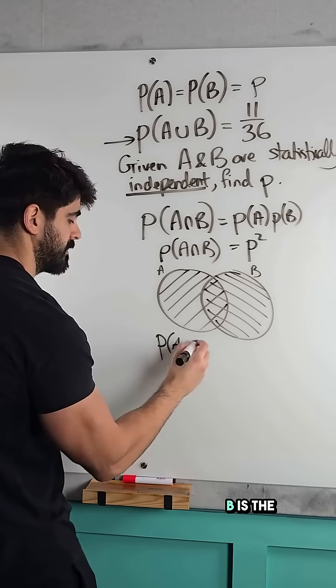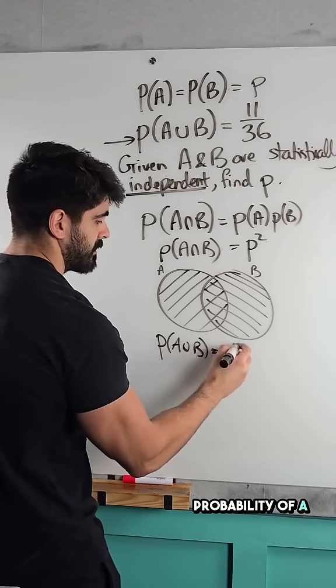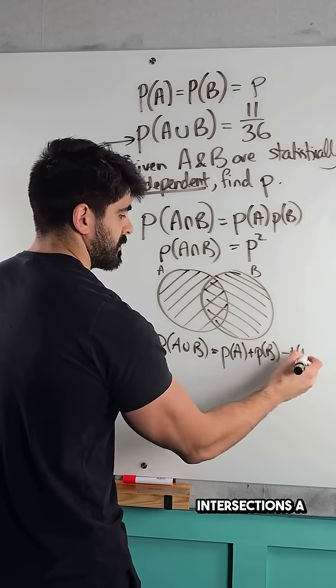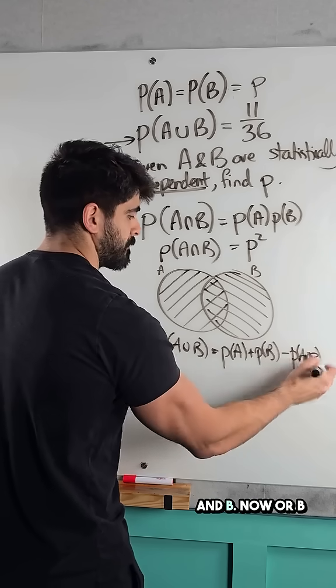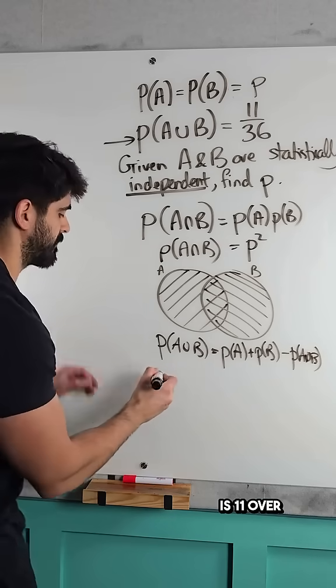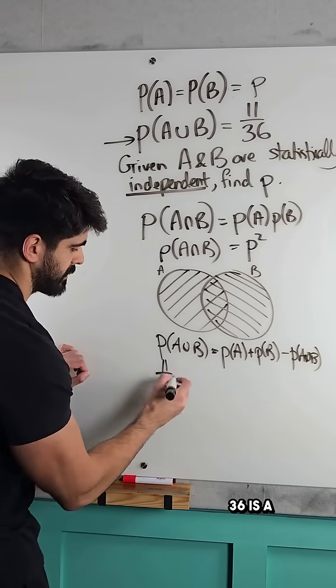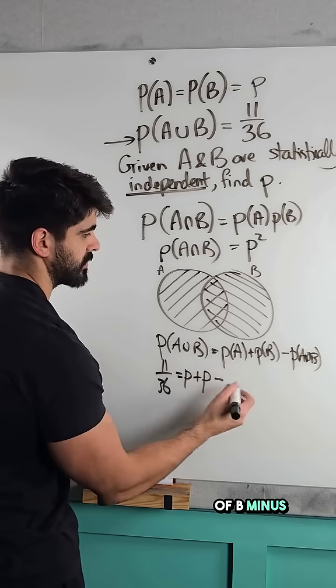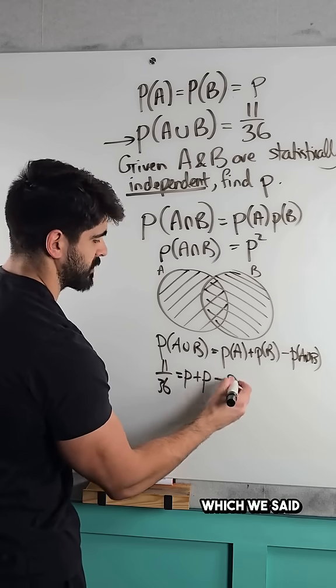So the probability of A or B is the probability of A plus the probability of B, but then we're going to minus one of the intersections, A and B. Now A OR B is 11 over 36 is the probability of A plus the probability of B minus A and B, which we said was P squared.